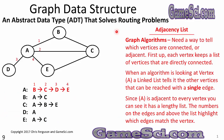Graph algorithms need a way to tell which vertices are connected or adjacent. The adjacency list has each vertex keep a list of vertices that are directly connected. When an algorithm is looking at vertex A, a linked list tells it the other vertices reachable with a single edge. Since A is adjacent to every vertex, it has a lengthy list. A is connected to B, C, D, and E — edges 1 through 4 match each connection.